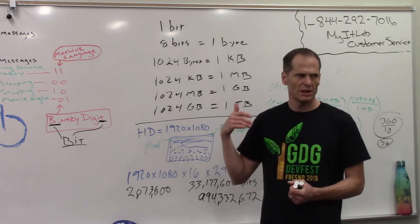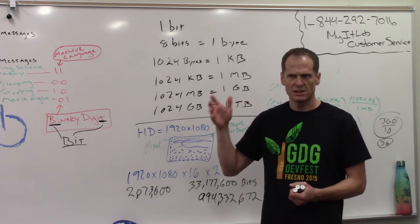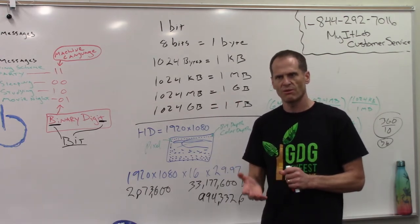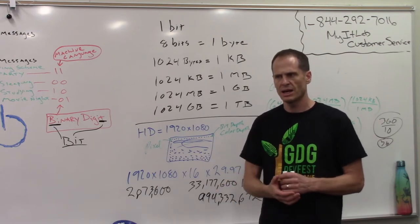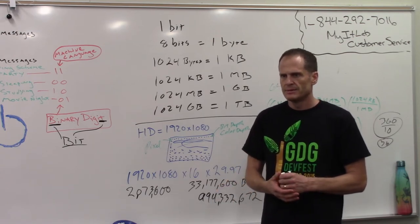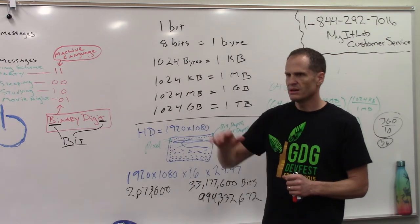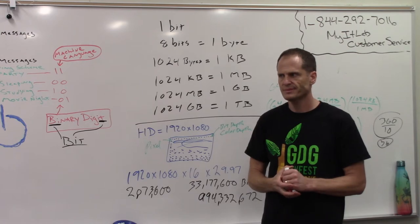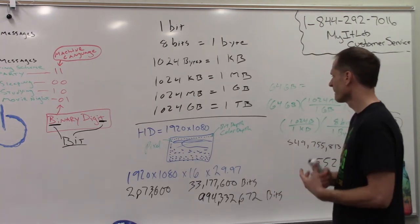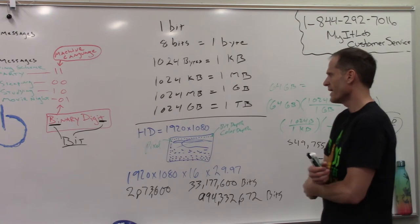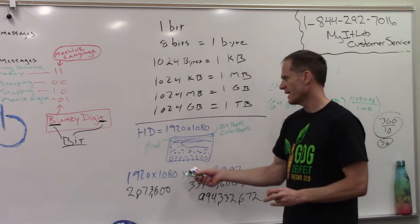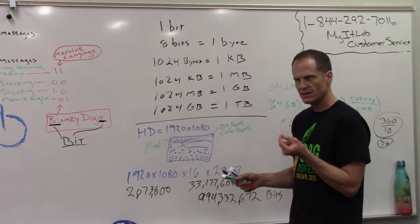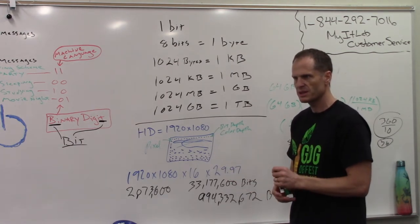We can measure bits. One bit is a bit. Eight bits is a byte. 1,024 bytes is a kilobyte. 1,024 kilobytes is a megabyte. 1,024 megabytes is a gigabyte. 1,024 gigabytes is a terabyte. Two to the end tells me if I have this many circuits, how many messages I could store. You learned about HD is 1920 by 1080 resolution. You learned about pixels. You learned about bit depth. Color depth is how many zeros and ones are storing color information for each pixel.